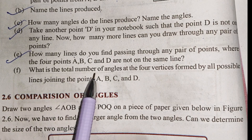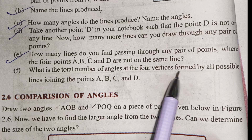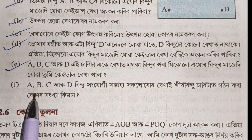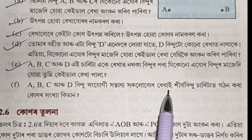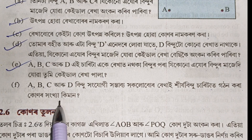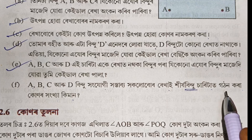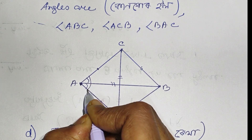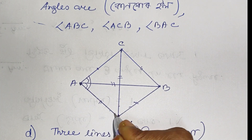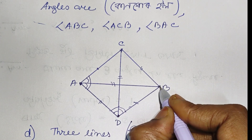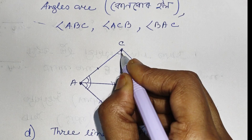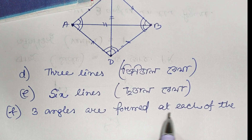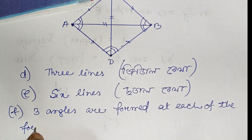Part F: What is the total number of angles at the four vertices formed by all possible lines joining the points A, B, C, and D? Three angles are formed at each of the four vertices.